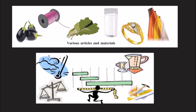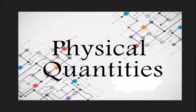In this way we use physical quantities to measure things and we talk about them in our day-to-day life. Now, these physical quantities can be of two types: the first is called a scalar quantity and the second is called a vector quantity.